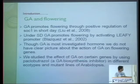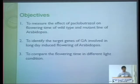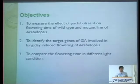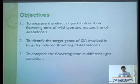In our experiment, we used Paclobutrazol as a GA biosynthesis inhibitor in different ecotypes and mutant lines. The objectives were: to measure the effect of Paclobutrazol on flowering time in wild-type and mutant lines, to identify target genes of GA, and to compare flowering time in different light conditions — specifically white light versus a combination of blue and far-red light.